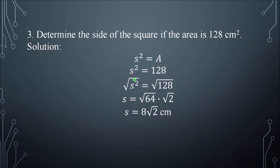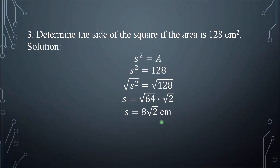Get the square root of both sides. We have √(s²) = √128. Square root of s² is s. √128 can be simplified into √64 × √2. 64 is a perfect square factor of 128. √64 is 8, and √2 remains. So the final answer is s = 8√2 centimeters. This is the side of the square if the area is 128 cm².